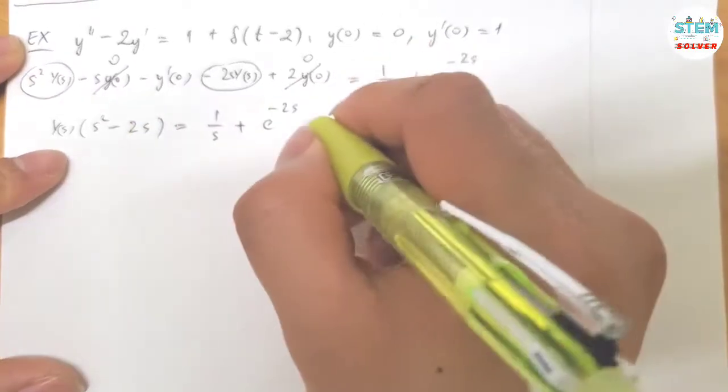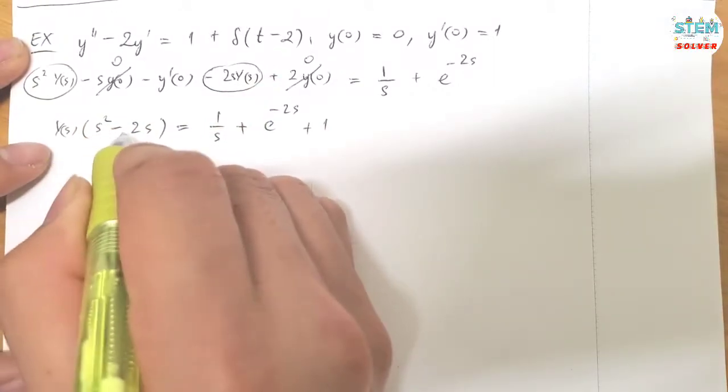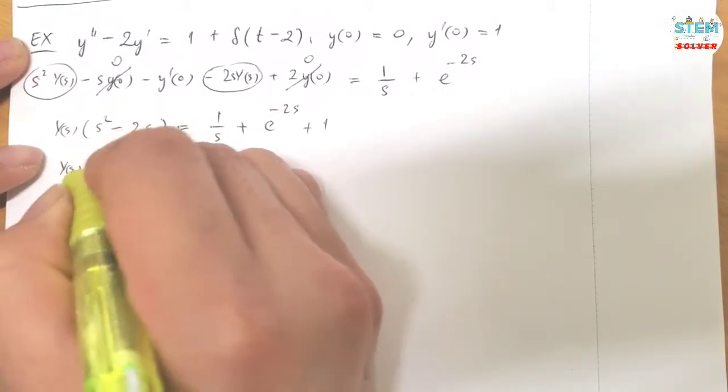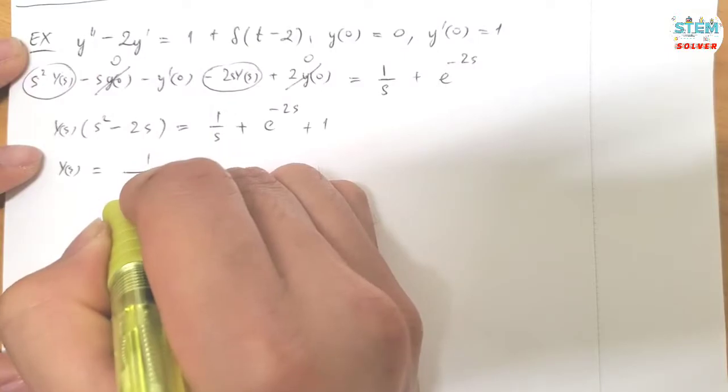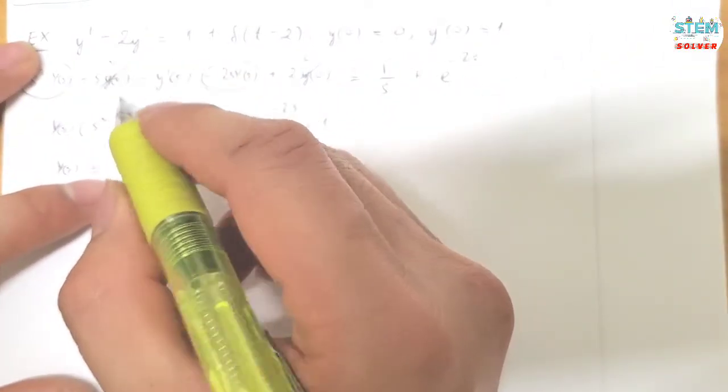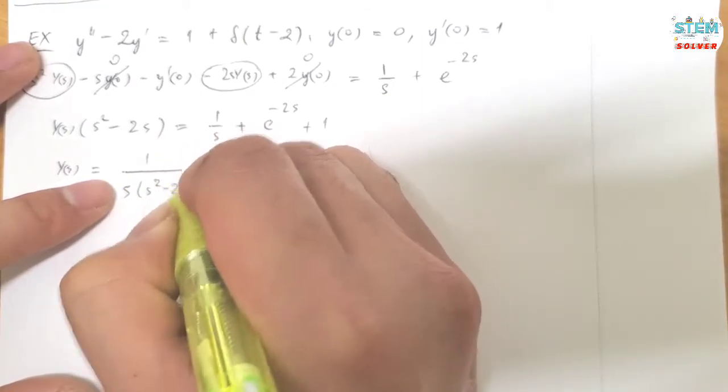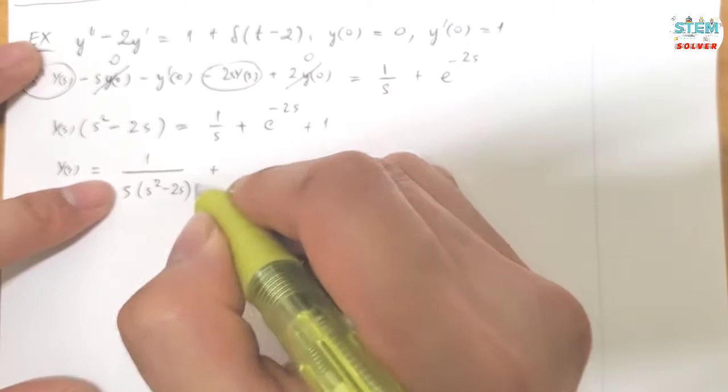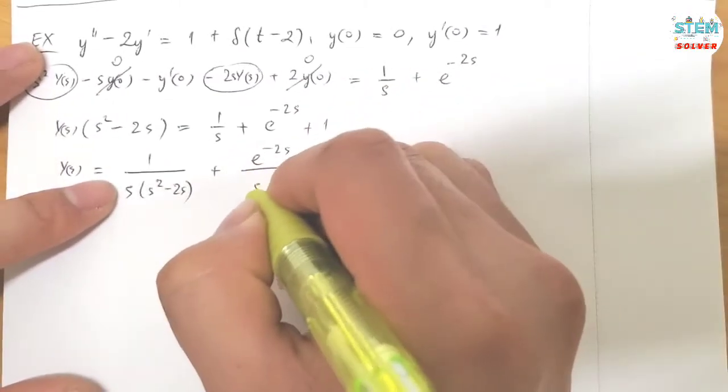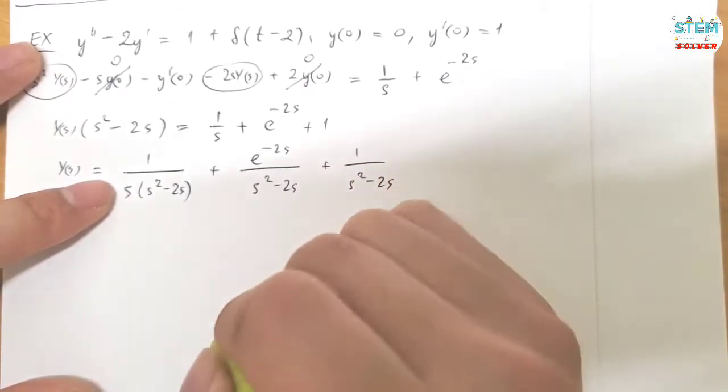And Y of 0 equals 1, negative 1, move to the right, become positive 1. Now divide both sides by S squared minus 2S. So I have 1 over S times S squared minus 2S plus E to the negative 2S over S squared minus 2S.